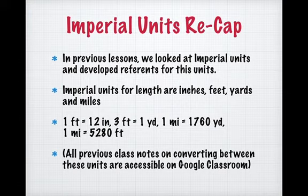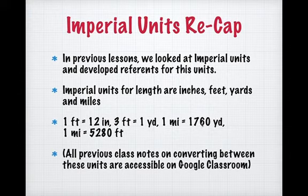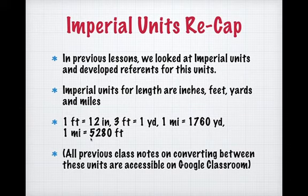When we talk about imperial units, these are the units typically used in the United States. Imperial units are going to be our inches, feet, yards, and miles. We've talked about the relationships between these and done conversions going from yards to feet and inches, or miles into yards, feet, and inches. We know there are 12 inches in a foot, 3 feet in one yard, 1,760 yards in a mile, and because there are 3 feet in a yard, we multiply by 3 to get 5,280 feet in a mile.